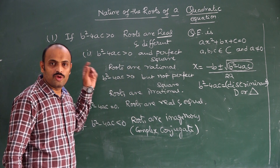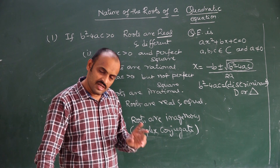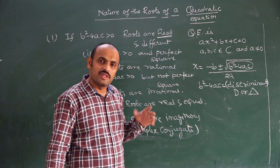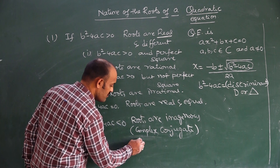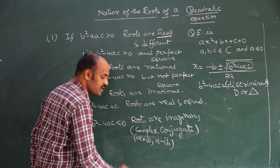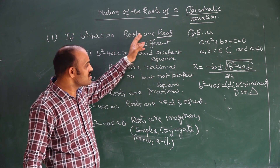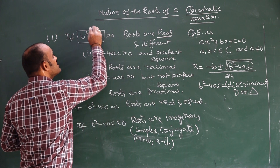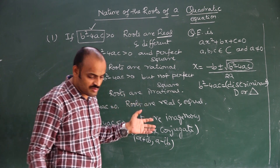If one root is real, obviously the other root will also be real. If one root is imaginary, the other root will also be imaginary, because we have at most two possible roots. They are complex conjugates — that means if one is in the form A+iB, the other will be in the form A−iB. So this is the basic part of the nature of the roots and how we decide what kind of roots are going to occur.